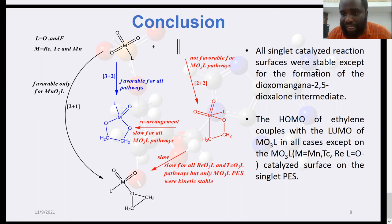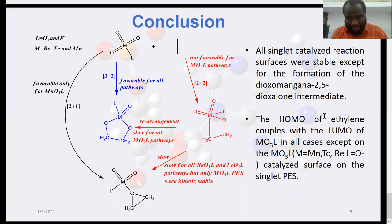In all cases, the structures were unstable on the singlet surface, except for the formation of the dioxylate from the MnO3F catalyzed pathway. It has a dioxomanganese-2,5-dioxolane intermediate. In all cases, the HOMO of ethylene couples with the LUMO of the complex in all cases, except in the anionic cases.